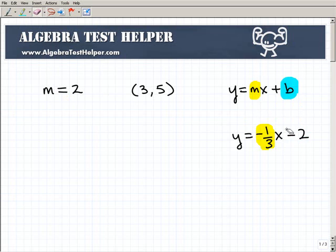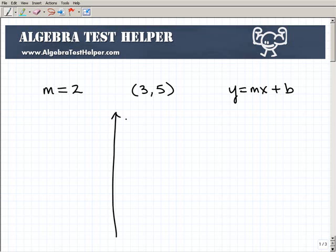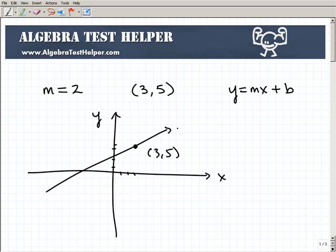But let me give you kind of a graphical way we can imagine this problem. So let's say I have this x, y plane. Just a quick sketch here. So I have a line that passes at the point 3, 5. So let's say 1, 2, 3, 1, 2, 3, 4, 5. Let's say that's the point right there, 3, 5. So we have this line that passes through it. It has a slope of 2.